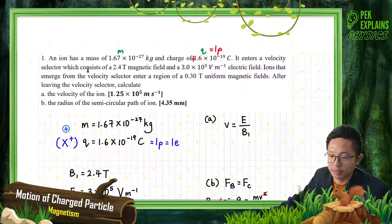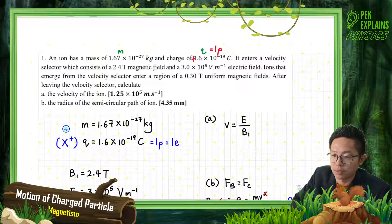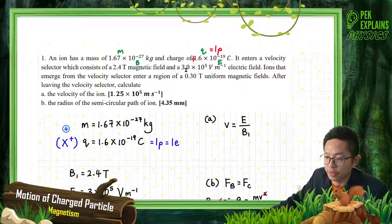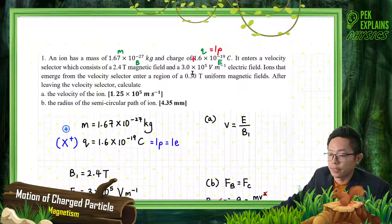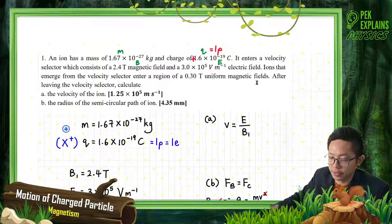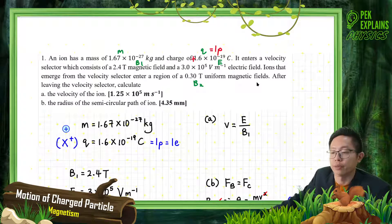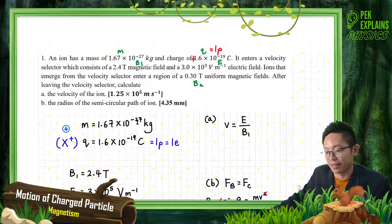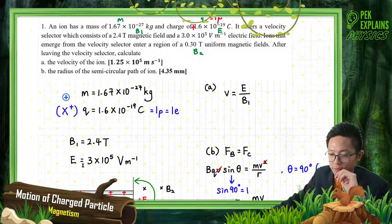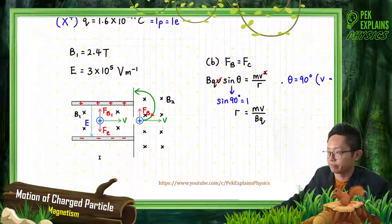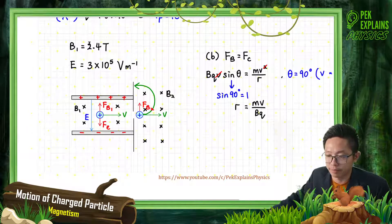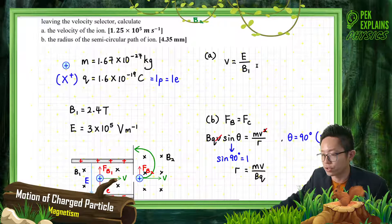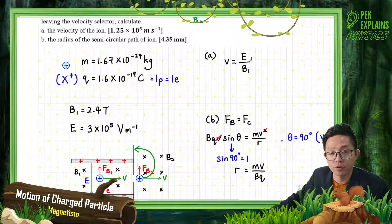So it enters a velocity selector which consists of this magnetic field and this electric field. Ions now enter another field. Here is B1, this is B2, another field. So what is the velocity of the ion? What velocity is being selected? I'll rewrite B1 and E here. This is the velocity selector part, you select this velocity according to the ratio of electric field over magnetic field.